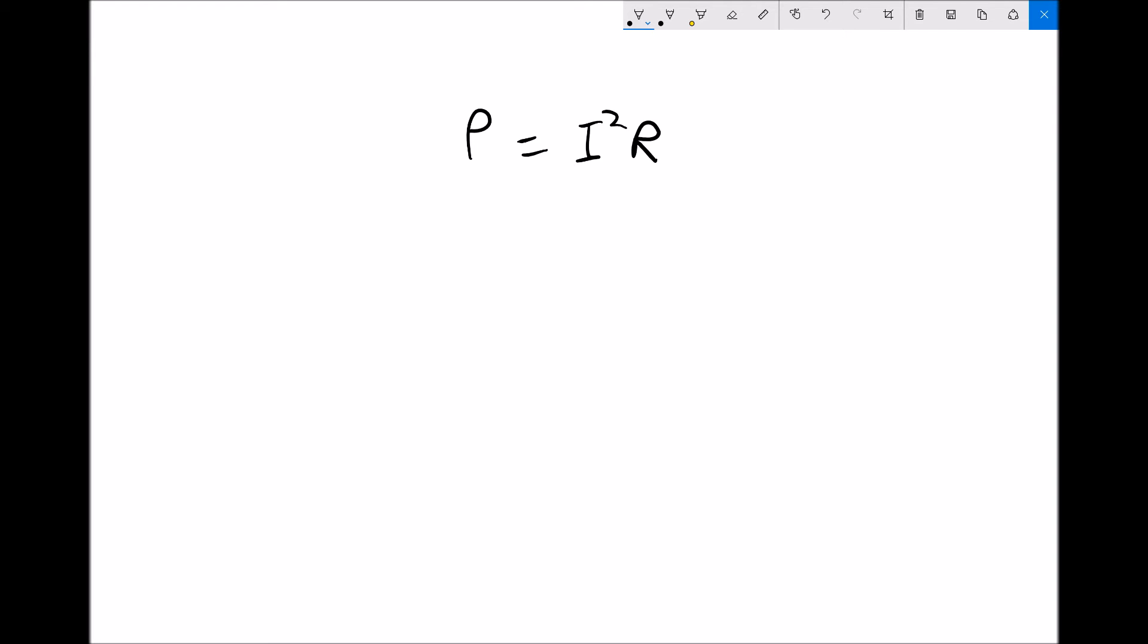What the question might give you is the amount of power that's being dissipated, and it might ask for the current through a given resistor for that amount of power to be dissipated. So what we would need to do is rearrange that equation for the current i.